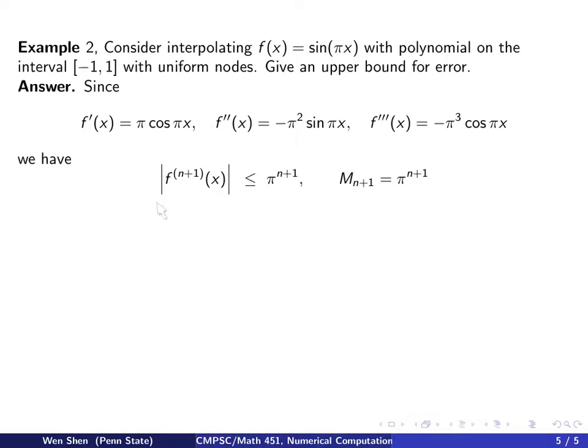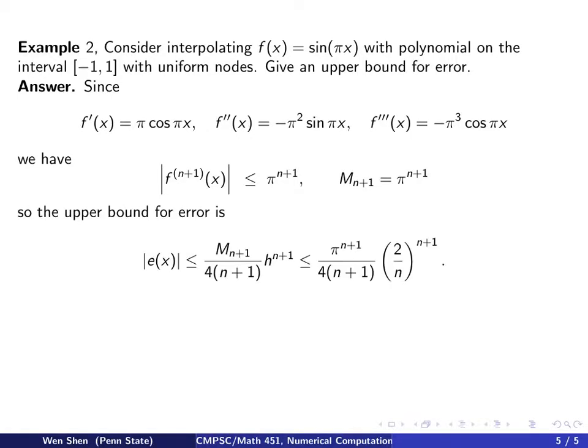So if we want an upper bound on the absolute value for this n plus 1 derivative of f, we see that it will contain pi to the power n plus 1 as the factor in front of some sine and cosine, which is bounded by 1 in absolute value. So we have this estimate, which means the constant M n plus 1 in the error estimate now equals to pi to the power n plus 1.